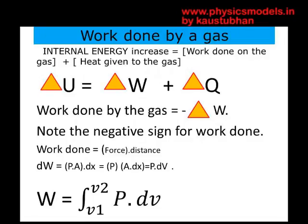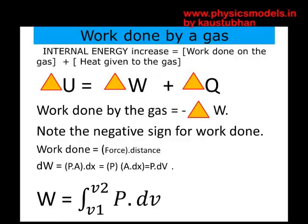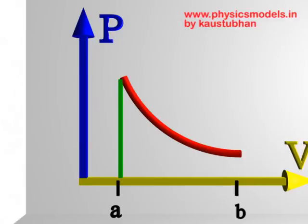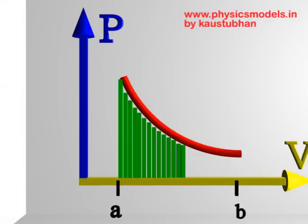In terms of derivation, work is force times distance as we saw in Newtonian physics. The force here is the force by the gas, and the distance is the distance moved by the piston, which could be a small dx because we are considering a quasi-static process — infinitely slow, at every point in equilibrium. Force is pressure times area, and combining area with dx gives dV, so work done is P·dV.